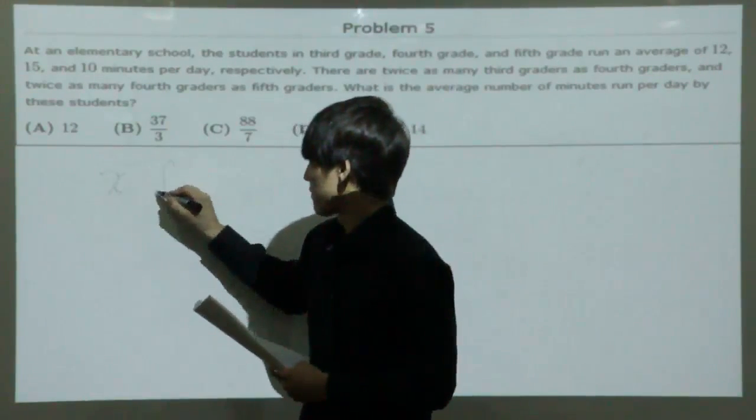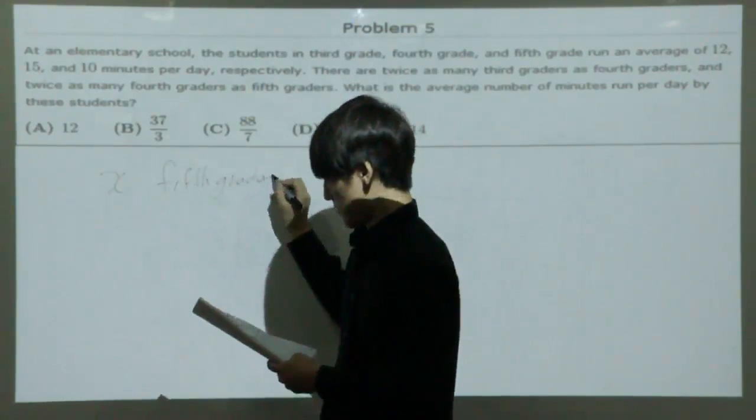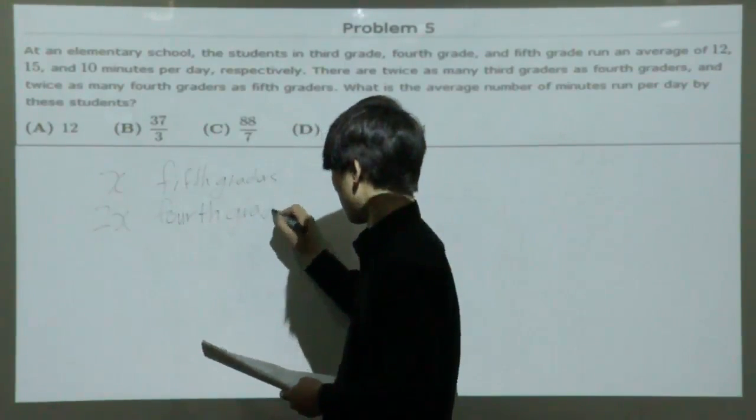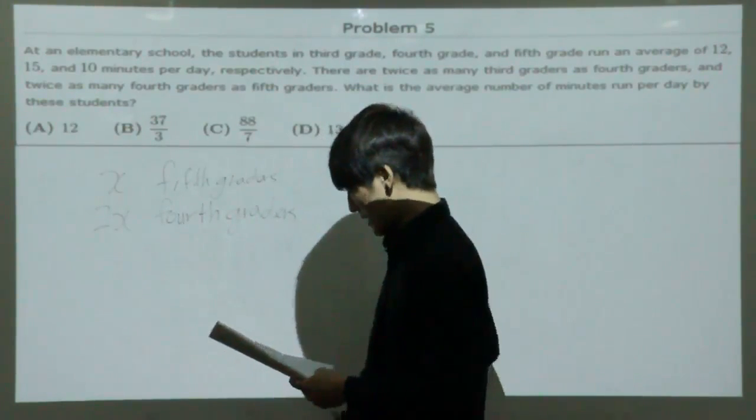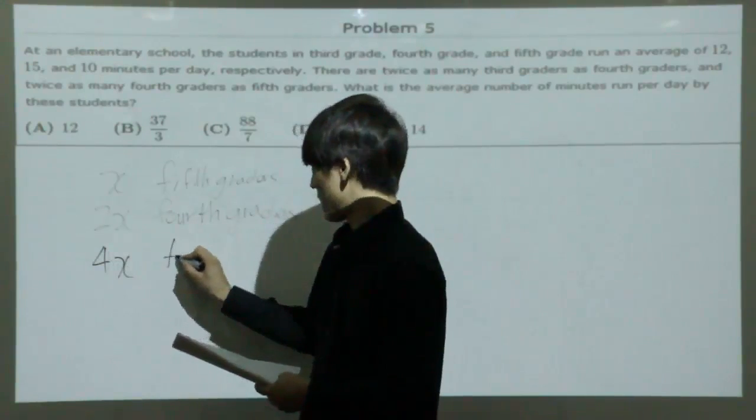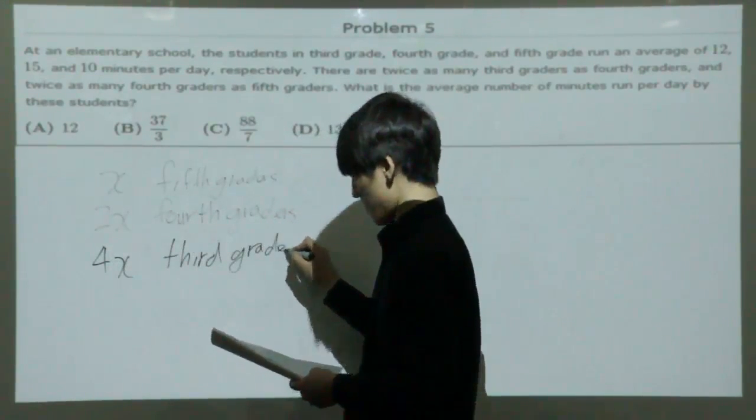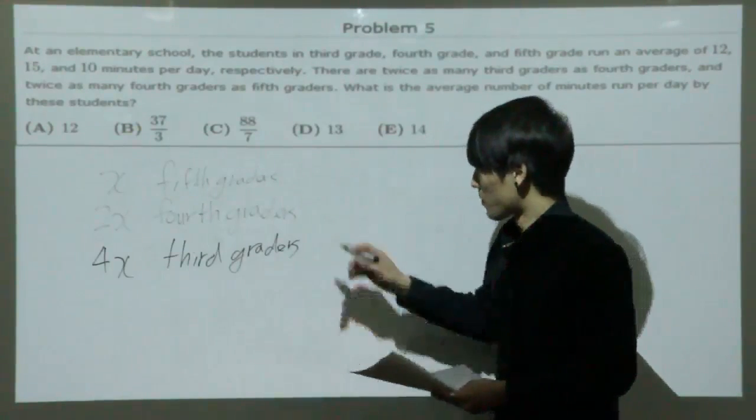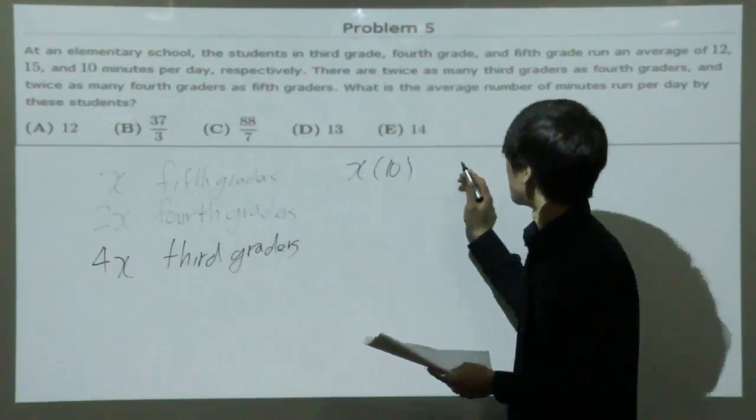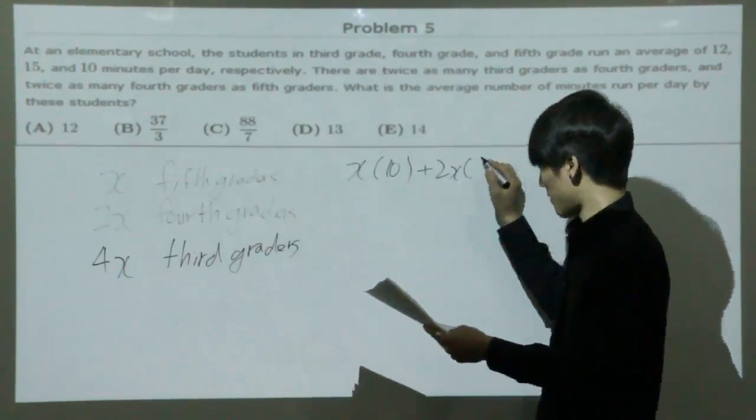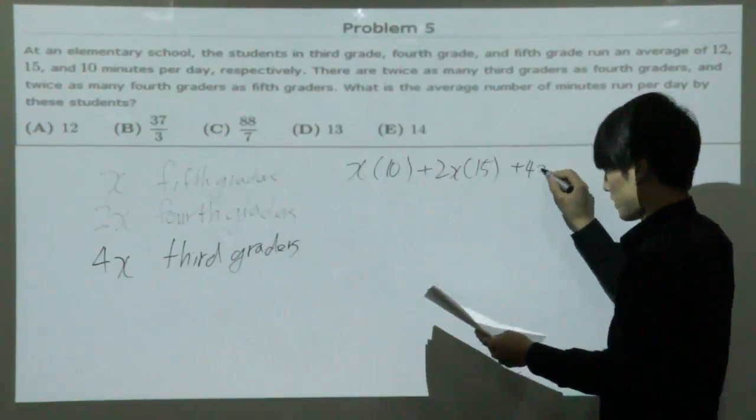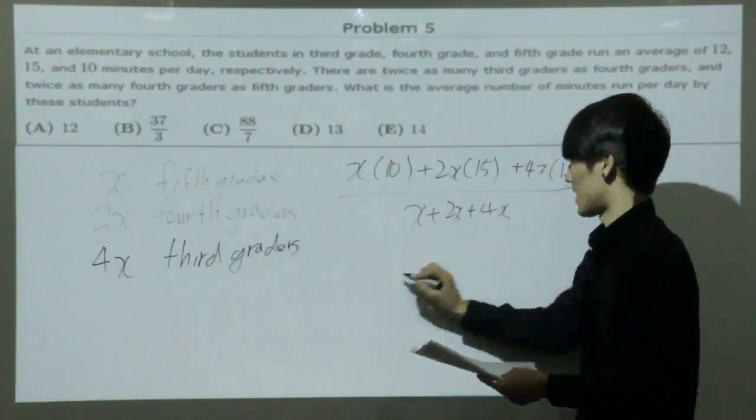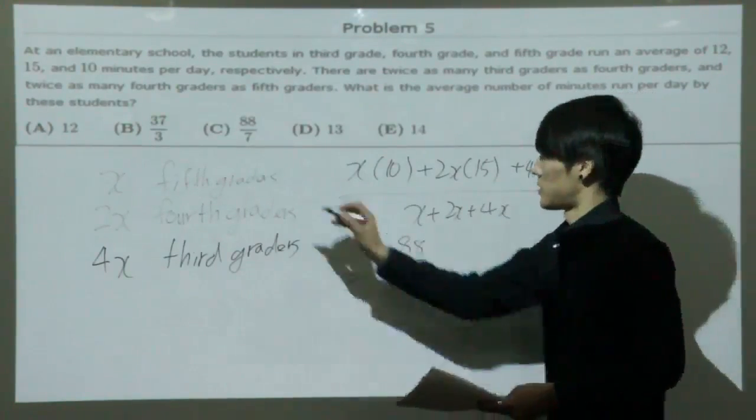So let's say X is the 5th graders. 2X, there's twice more for 4th graders. And there are twice as many 3rd graders as 4th graders, so 4X be 3rd graders. Then you're looking for the average number of minutes run per day by these students. For 5th graders, they ran 10 minutes. For 4th graders, they ran 15. And 3rd graders ran 12. And you would have to divide this by the number of students, which is X plus 2X plus 4X to get the average, which would equal 88 over 7 if you solve this out, which is choice C.